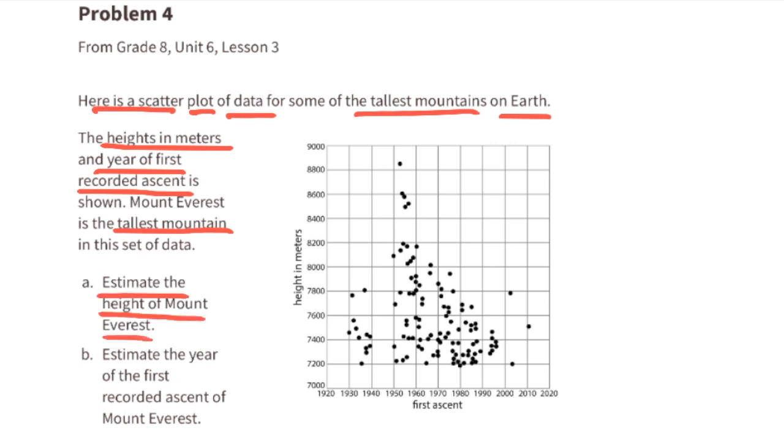A. Estimate the height of Mount Everest. The horizontal axis represents the first ascent and the vertical axis represents the height of the mountain in meters. This outlier at the top represents Mount Everest. And it looks like it's just above the 8,800 meter mark. So we could say it's about 8,850 meters or so.